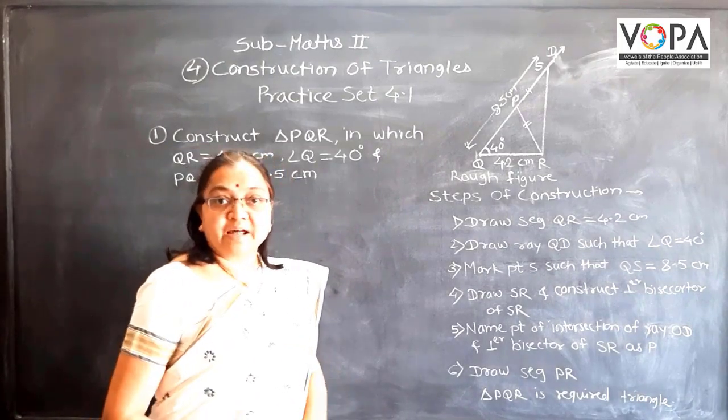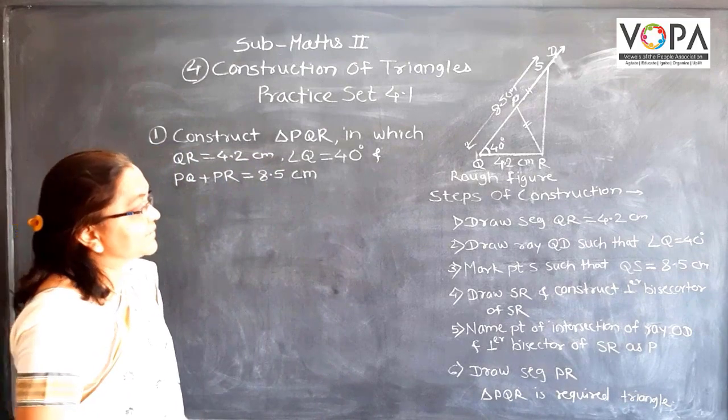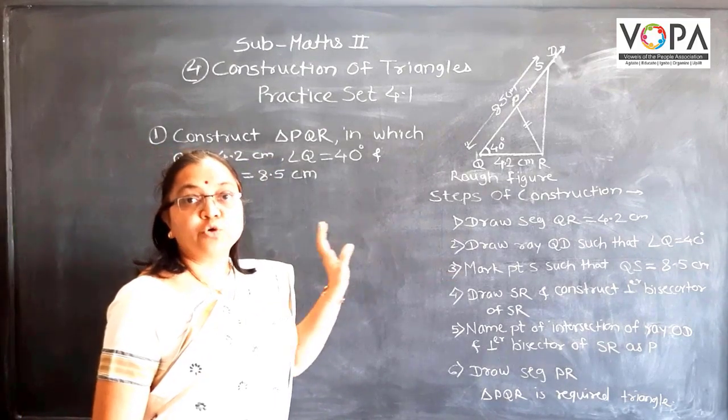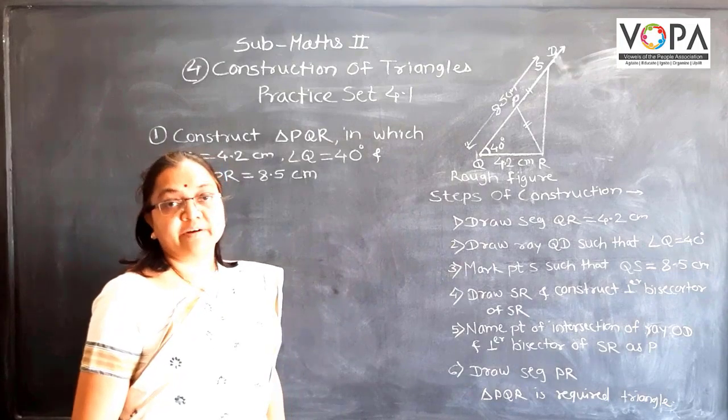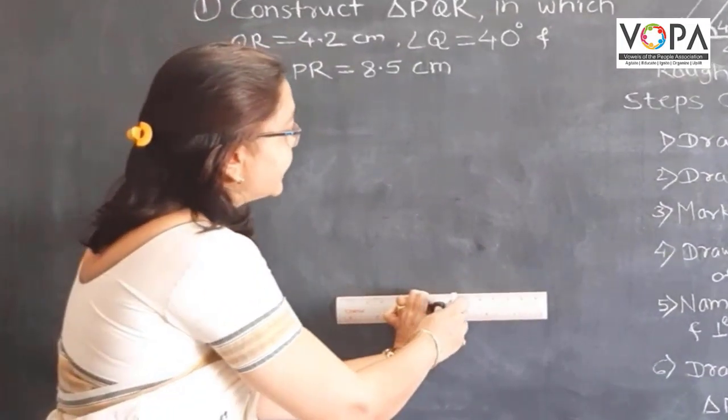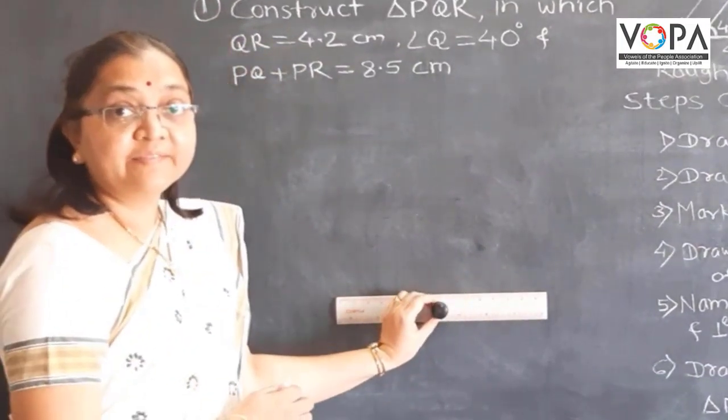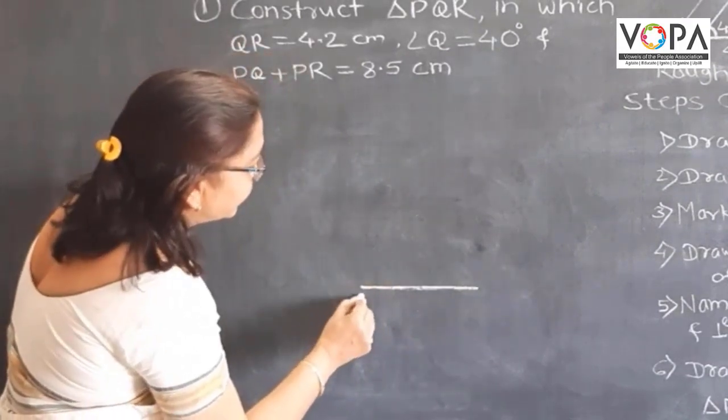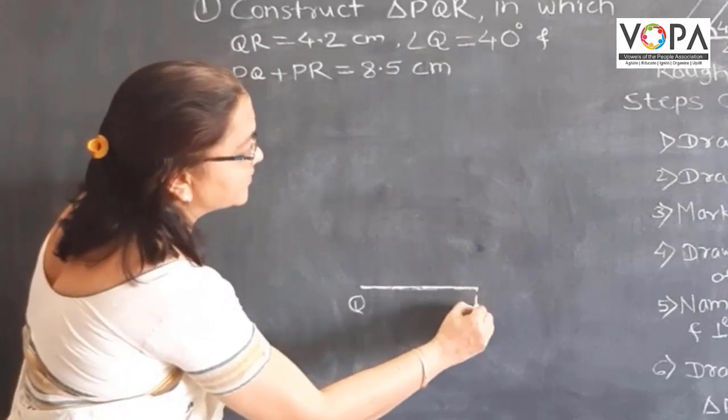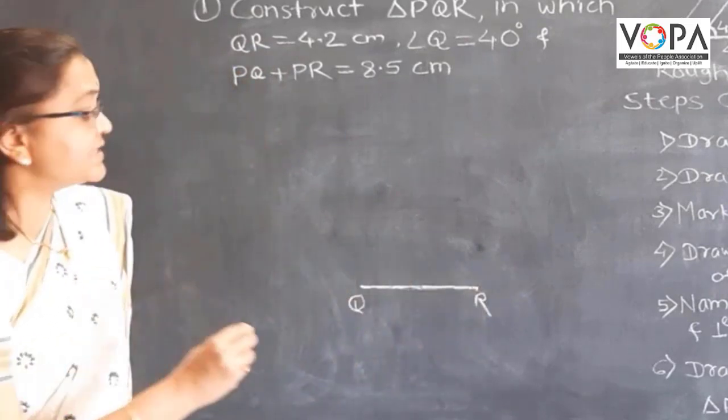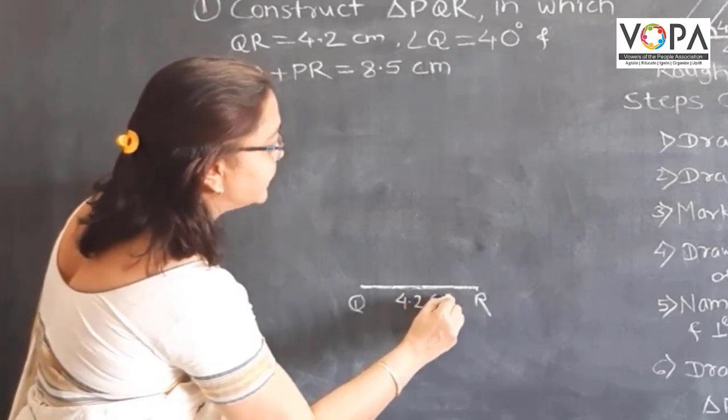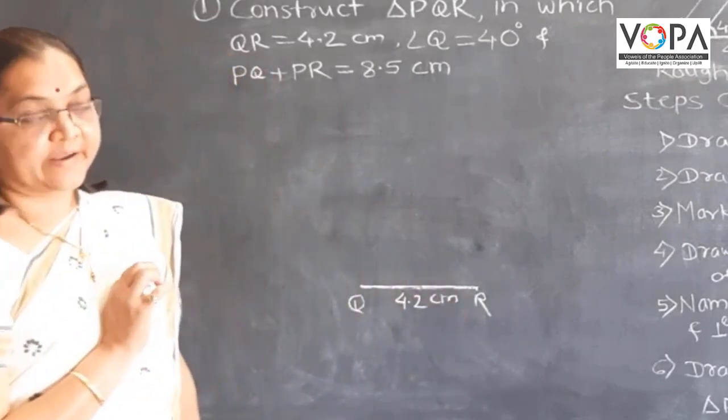Then let's start the first step. The first step is to draw the base of that given triangle. Draw the segment having length 4.2 cm. This is segment QR. Its length is 4.2 cm. This is the base of that triangle.